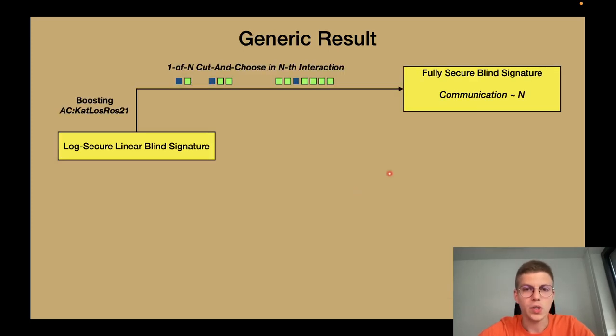To summarize our first result, which is a generic result, we need to understand the boosting transform from last year's Asia Crypt by Katz, Loss and Rosenberg. This transform takes a logarithmically secure so-called linear blind signature scheme, applies some 1 out of n cut and choose and we obtain a fully secure blind signature scheme. This secure blind signature scheme has still efficient signature sizes, but the communication is not good. This is because this parameter n of the cut and choose grows in every interaction and our communication grows linear with this parameter.